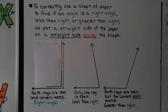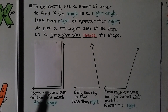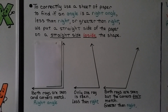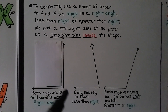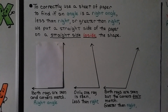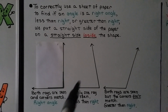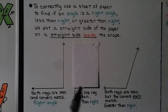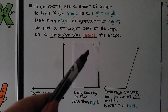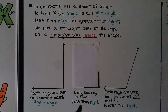To correctly use a sheet of paper to find if an angle is a right angle, less than right, or greater than right, we put a straight side of the paper on a straight side inside the angle. We can see both rays — one going this way, one coming up this way — and the corners match perfectly. So this is a right angle. Now let's try this one. When we put our corner of the paper there, we only see one ray; the other one is going underneath the paper. So that's less than a right angle.